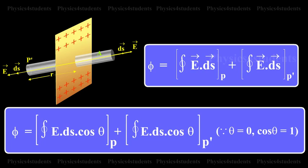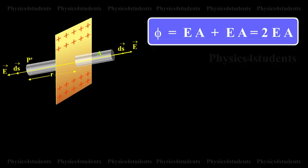Since theta equals 0 and cos theta equals 1, this equals E A plus E A equals 2 E A.